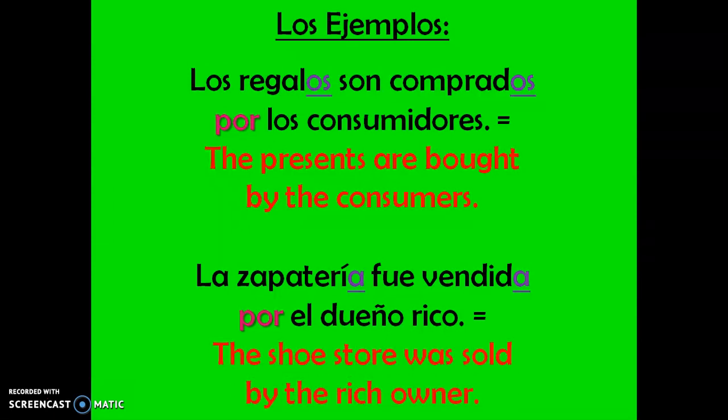Notice, in these examples, regalos our subject is agreeing with our past participle comprados — they're both masculine plural, so comprados is acting like an adjective. In our second example, zapatería is feminine singular, and our past participle vendida is agreeing with our subject zapatería. Also notice our forms of ser: in the first example we're in the present tense — they are bought; in the second example we're in the preterite — it was sold.